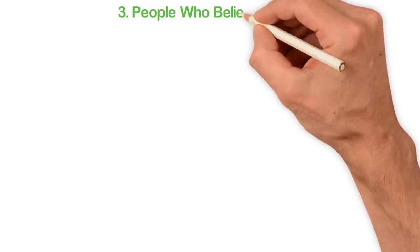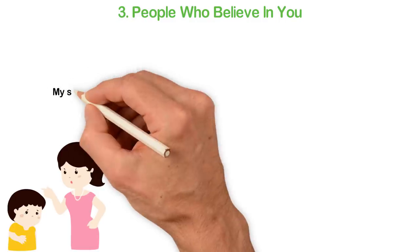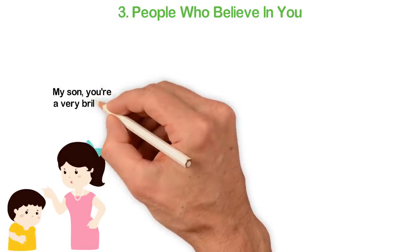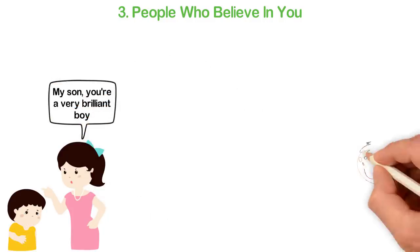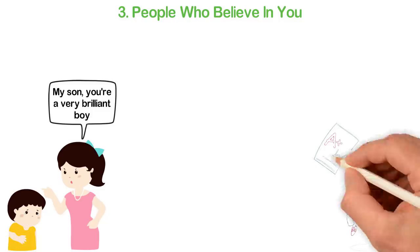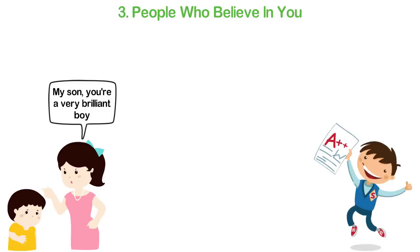3. People who believe in you. When I was a little boy, my mother told me, My son, you're a very brilliant boy. Even though my school's report cards showed that I was below average for more than a decade, I believed that I was very brilliant and somehow, I became very brilliant.